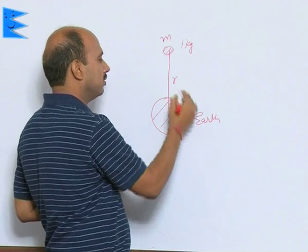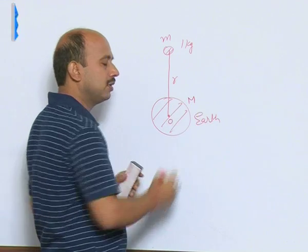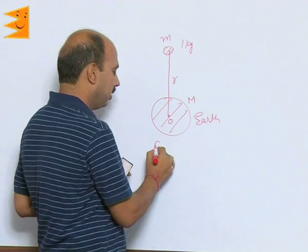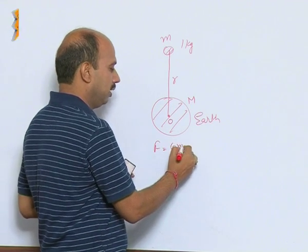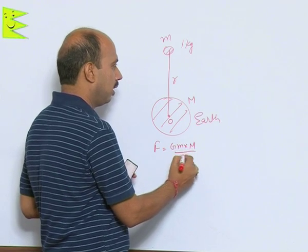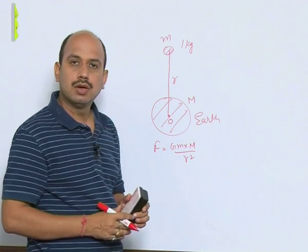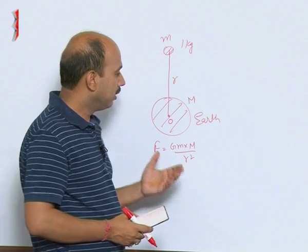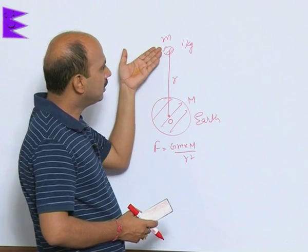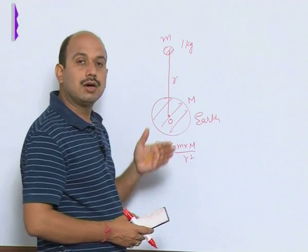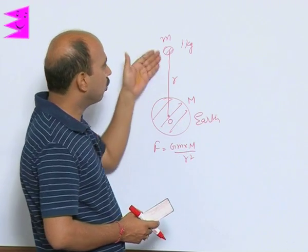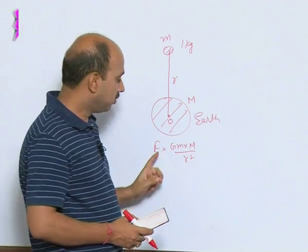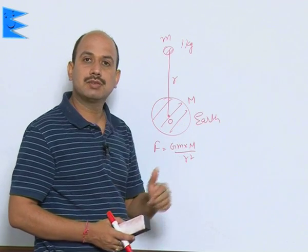Suppose this is mass m and this is mass capital M, distance is R, F is equal to G m into M upon R squared. This is a gravitational force, this is a mutual force. It means whatever force this object applies on Earth, Earth also applies same force on the object. This force for both objects is equal.